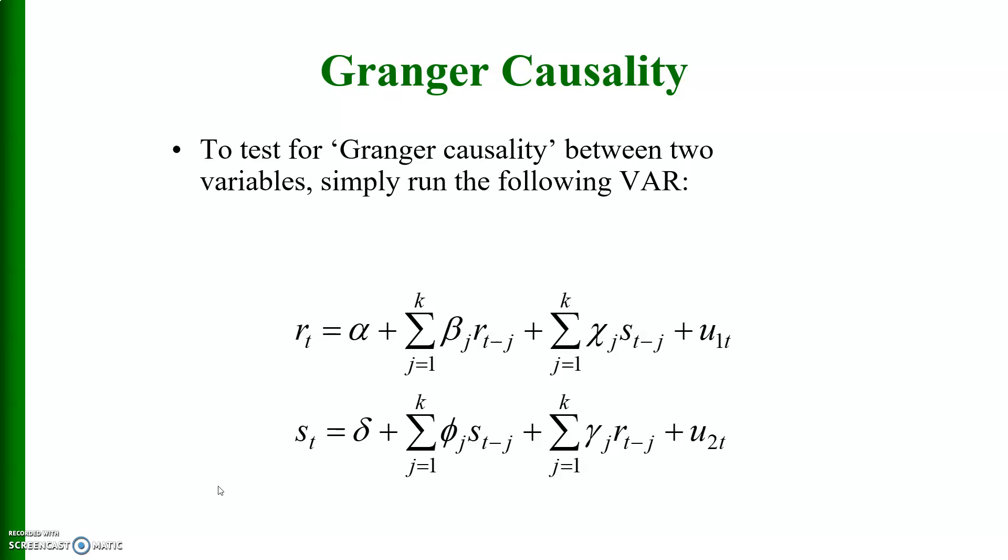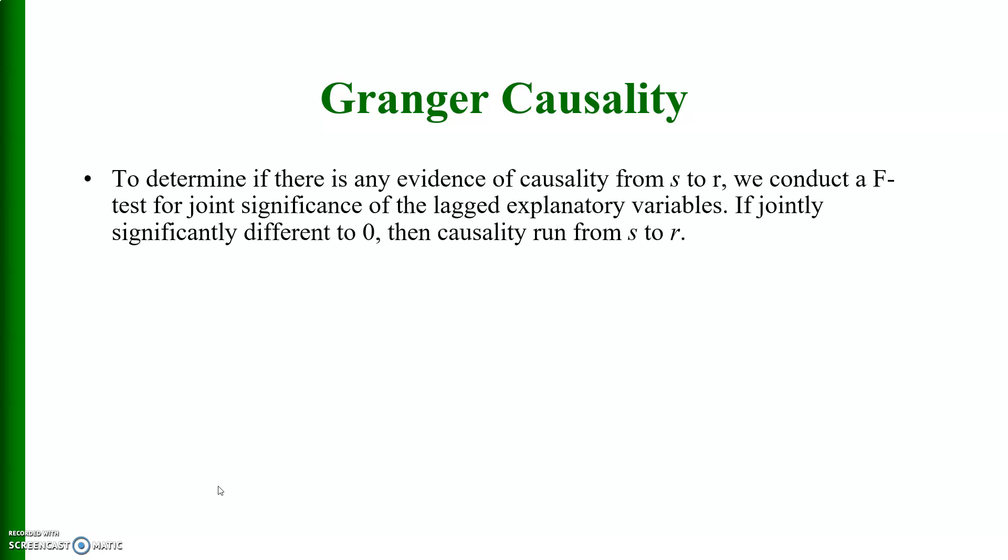To test for Granger causality between two variables, simply run the following VAR. That is r is a function of r with lags and h_t with lag values. Similarly, h_t is a function of its lag values and the lag values of r. To determine if there is any evidence of causality from s to r, we conduct an F test for joint significance of the lag explanatory variables. If jointly significantly different from 0, then causality runs from s to r.